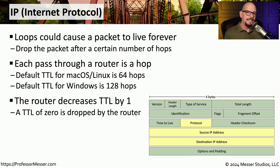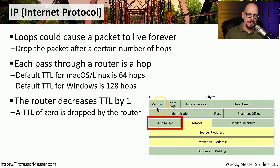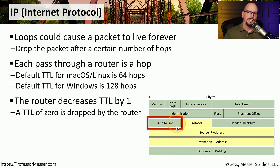Since the router decreases the TTL by 1 each time the packet goes through, it watches that number decrease every time it passes through a looped connection. When the TTL gets to 0, the router drops that packet. If we were to look at the IPv4 header frame, you could see there are version numbers, header length, type of service, total length, and other fields. The one we're interested in is the time to live field, which the router uses to determine if it has gotten down to 0 and should discard this packet from the network.